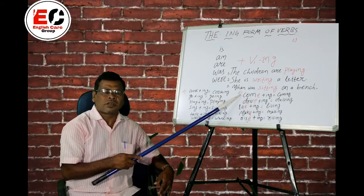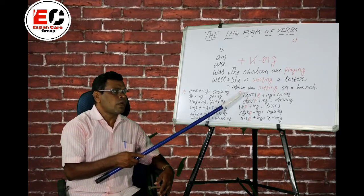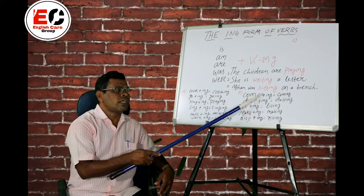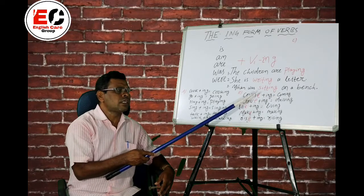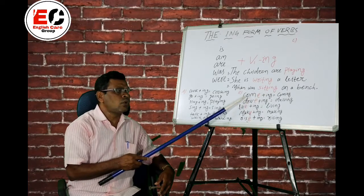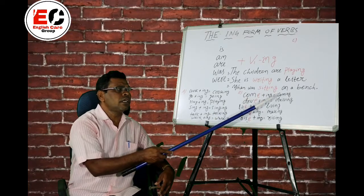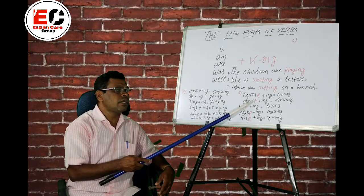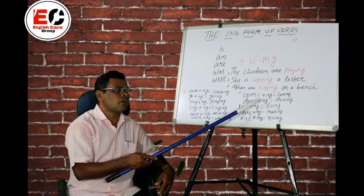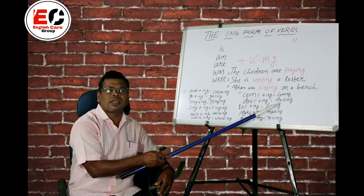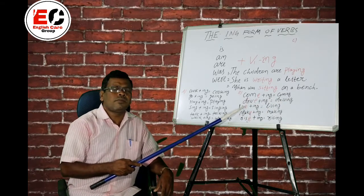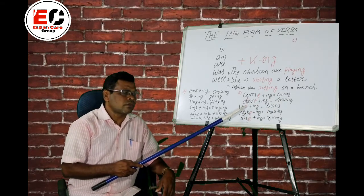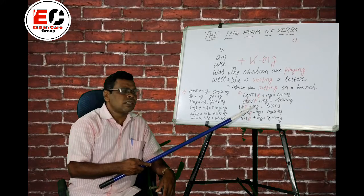Category B of verb one: verbs ending in 'e' — drop the 'e' and add ING. Come plus ING — coming. D-R-I-V-E, drive plus ING — driving. D-R-I-V-I-N-G, driving. L-I-V-E, living. L-I-V-I-N-G, living.